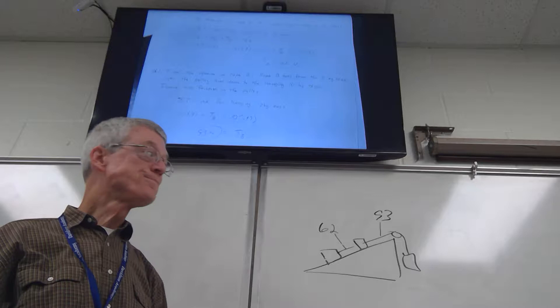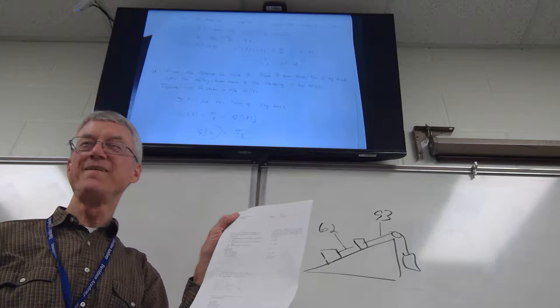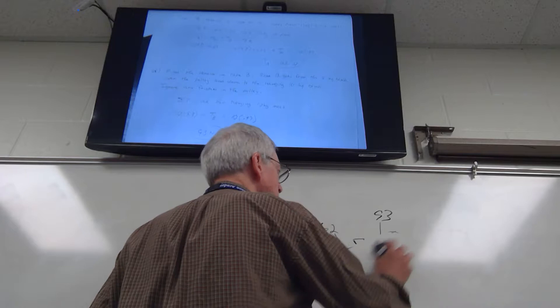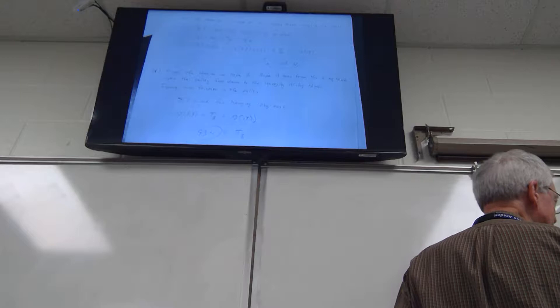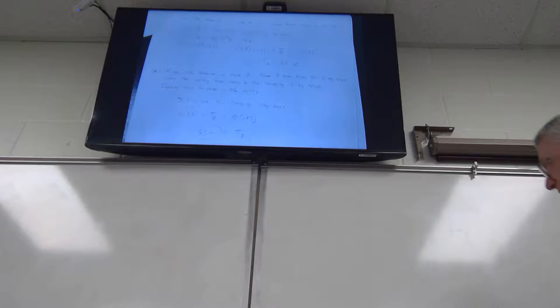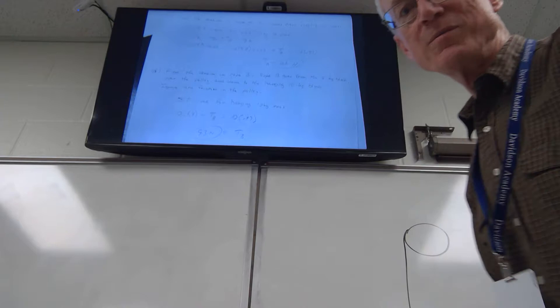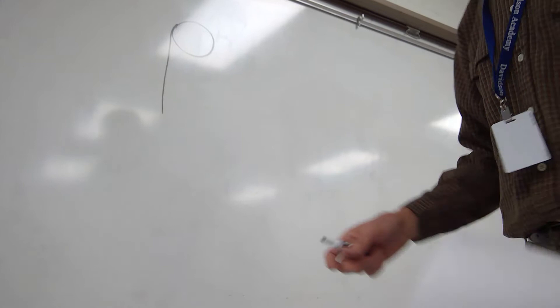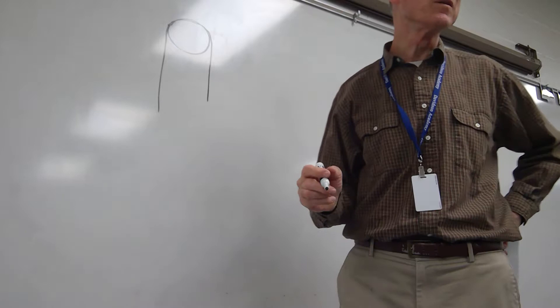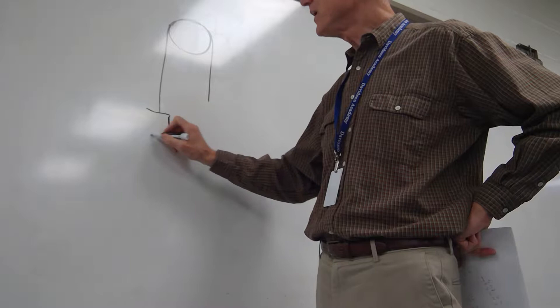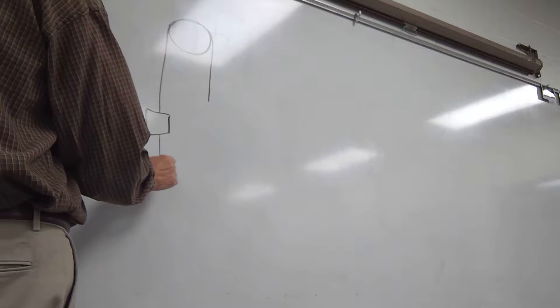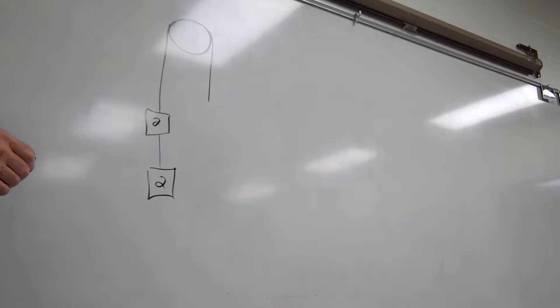Let's do one more pulley problem for practice. This time it's not on an incline — just a simple pulley. On one side there are two masses of 2 kg each (stacked/hanging); on the other side there are two masses of 1 kg each. When released, the heavier side goes down and the lighter side goes up.